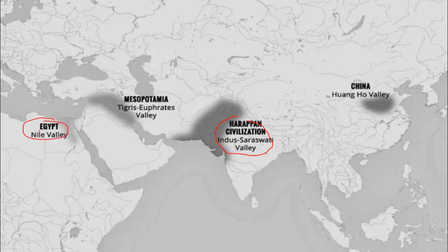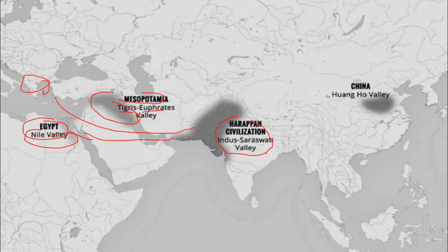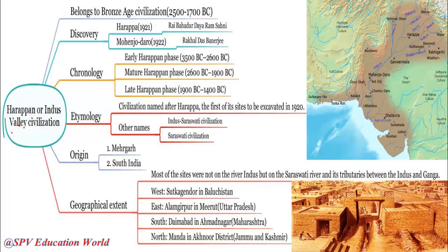In the same period, the Egyptian Civilization along the River Nile was flourishing with trade and other activities. Also, the Mesopotamian Civilization along the Rivers Tigris and Euphrates — presently linked to Iraq and nearby areas — was also present parallel to the Harappan Civilization, and trade was continuing from Egypt, Mesopotamia, and Greece to the Harappan Civilization. In China, the Chinese Civilization along the Huanghe Valley also flourished. These civilizations all started in the Bronze Age era.